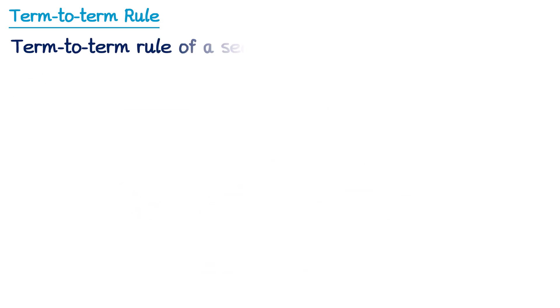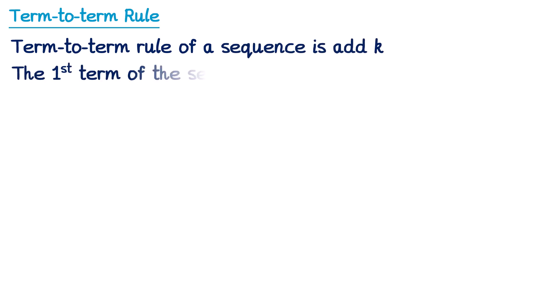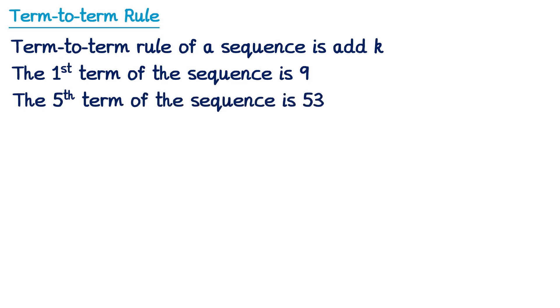Now let's have a look at one more question. For this one, the term-to-term rule of the sequence is to add k. We're told the first term, which is 9, and also the fifth term, which is 53. And we've been asked to work out the value of k. So this time, the term-to-term rule uses algebra rather than a number. It says to add k.